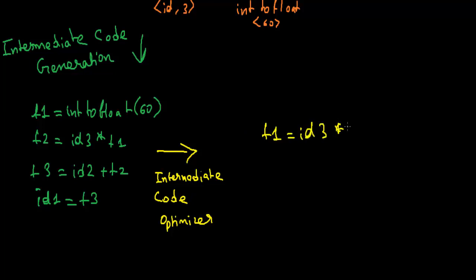So t1 will be id 3 into directly 60.0 we can write this, and id 1 we can directly write as id 2 plus t1. So we have saved a lot of time here.